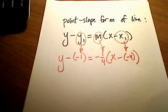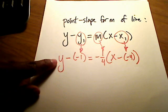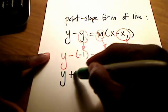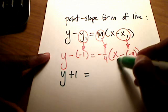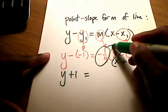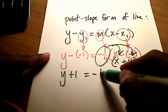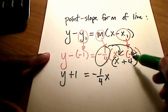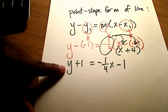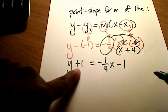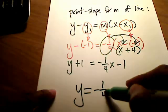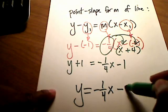So to clean all this up, the last thing is I want to get y all by itself. I really have y minus a negative 1, which is plus 1, is equal to, this is really x plus 4 inside this parentheses. And I'm going to distribute this negative 1 fourth to both of these. Negative 1 fourth times a positive 4 is simply just a negative 1. Let's get this y all by itself by moving this positive 1 over to the other side. Final answer is y equals negative 1 fourth x minus 2.